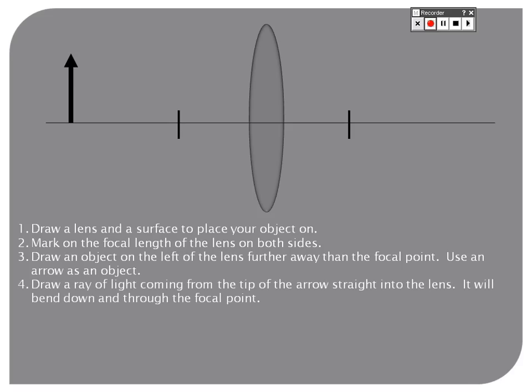The first ray of light we're interested in comes from the tip of the arrow and goes straight into the lens. So this one here, straight into the lens like that. Because it's going to the lens like that, just like a parallel beam would do, it bends down through the focal point, just like that.